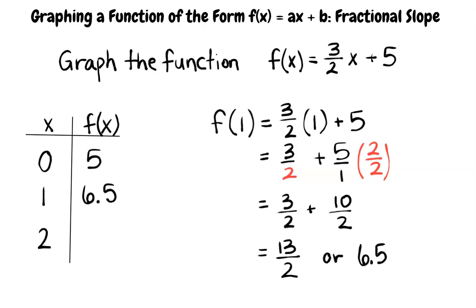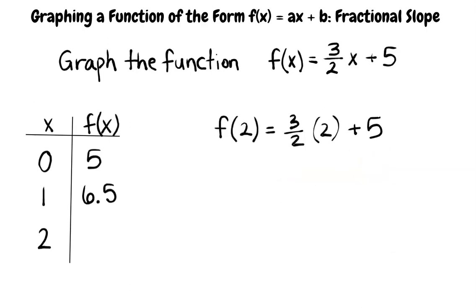Can you calculate the last point? Sure. First input 2 for x. The function becomes 3 over 2 times 2 plus 5. 3 over 2 times 2 simplifies to 3 because the 2s on the numerator and denominator cancel each other out. So then, we have 3 plus 5, which is equal to 8. So the last point is 2, 8.